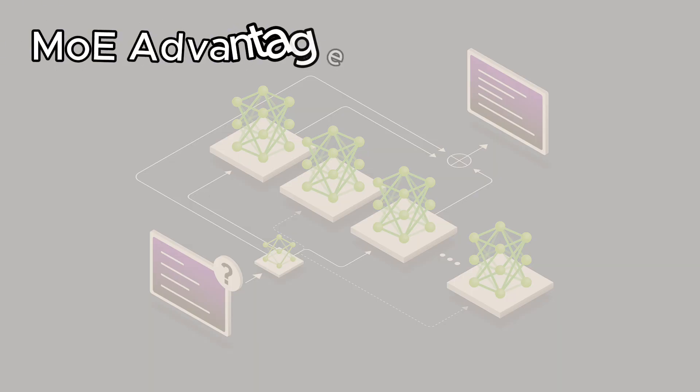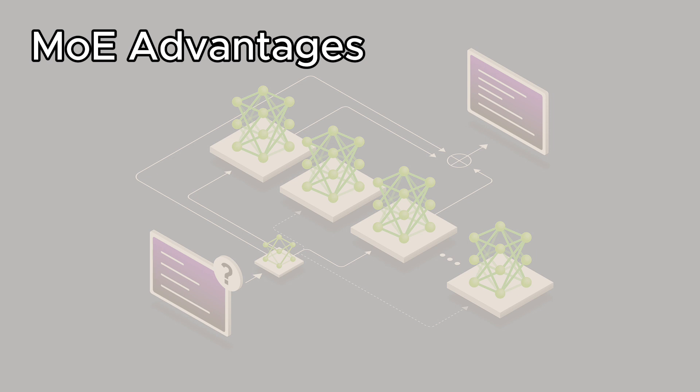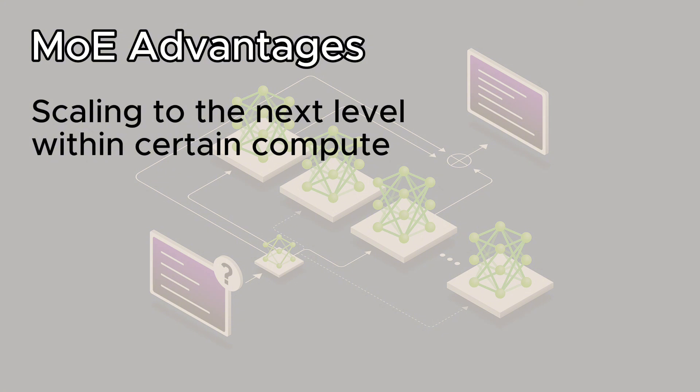So what's the main advantage compared to traditional methods to build LLMs? Mix of experts allow scaling the models to the next level. Let's say the Llama model, the biggest model they scaled is to 405B. If you want to scale the model beyond that, you either need a lot more GPUs or you can use a mix of experts. You can scale the same Llama model, 405B up to like 2 trillion parameters without significantly increasing the compute.